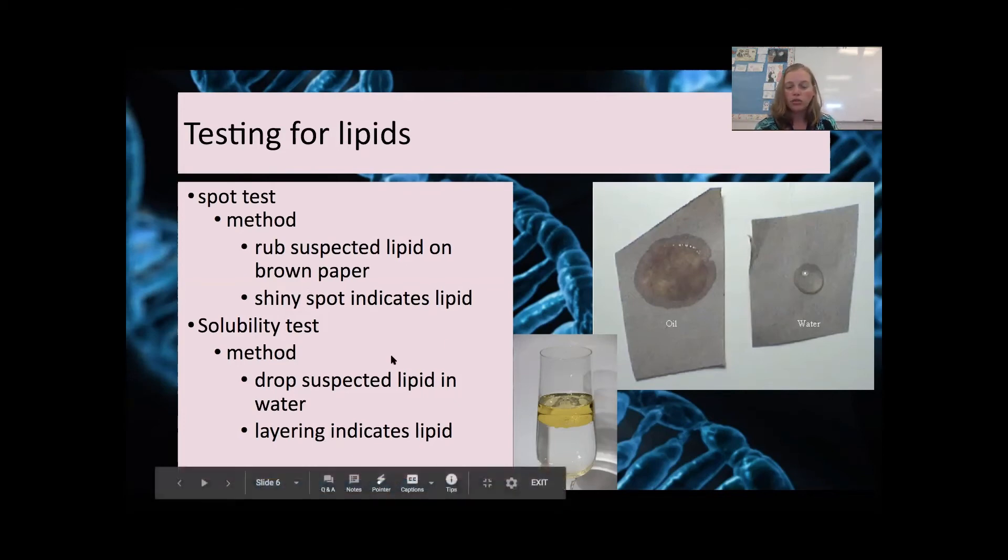The solubility test was another method we used to test for lipids, and we just dropped the food in water to see if it would dissolve, and we can see that we have this layer here, and that would indicate that you would have lipids present in that food group.